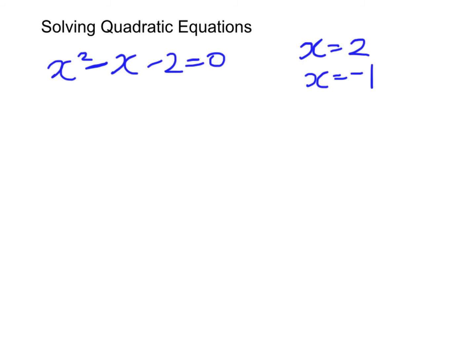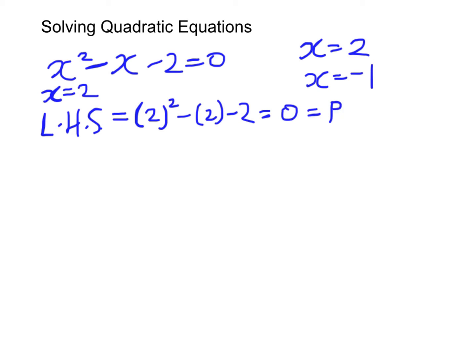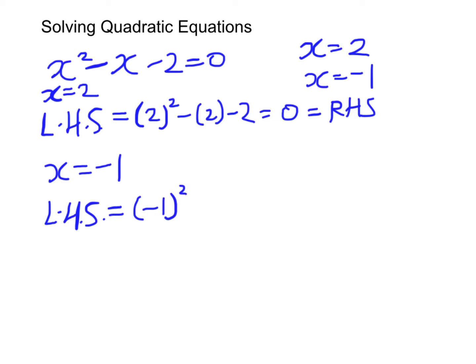Since we have two answers for this quadratic equation, we can check whether they are correct by back-substituting these values into the left-hand side. If x equals two, we have two squared minus two minus two, which equals zero — matching the right-hand side. And for x equals minus one, we have minus one squared minus minus one minus two, which gives one plus one minus two, again equal to zero. Therefore we have confirmed two answers for this quadratic equation.